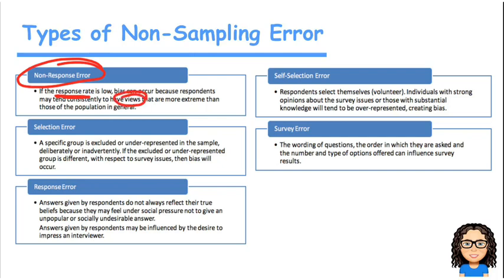Selection error is when you've got a group that is excluded or underrepresented in the sample. A response error is looking at the fact that the answers may not always be truthful. Self-selection, that's when people volunteer, and that means people with strong opinions could have a different opinion. So that means that opinion is over-represented or creates bias.